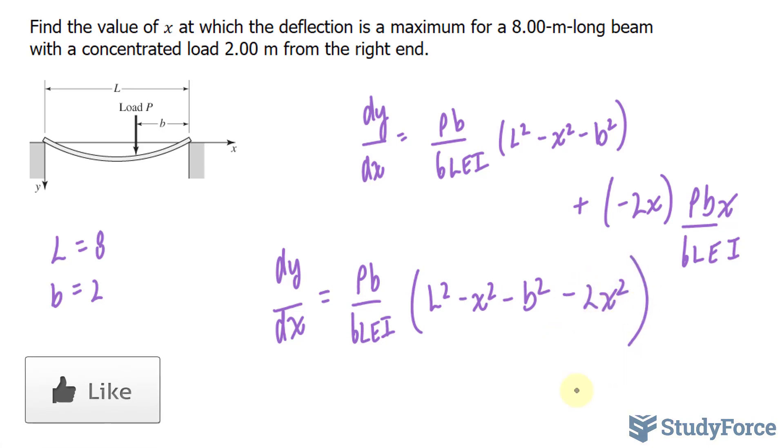And that leaves me with L squared minus x squared minus b squared minus 2x to the power of 2. I got negative 2x to the power of 2 because by taking out this Pb over 6LEI, I'm left with negative 2x times x which is negative 2x squared.